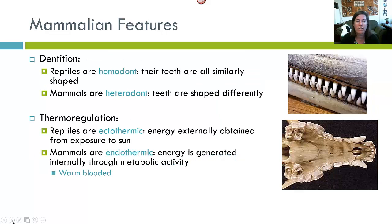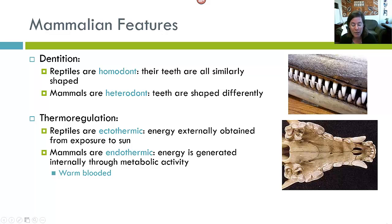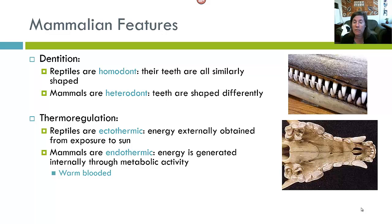Another very important distinctive feature of mammals is seen in their dentition. While reptiles consistently have similarly shaped teeth — they are what we call homodonts — mammals have differently shaped teeth. Mammals are heterodont, meaning their teeth are shaped differently.